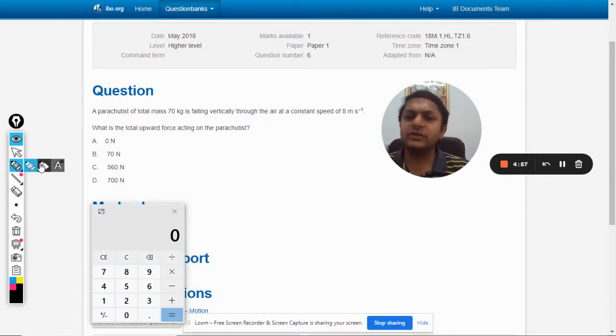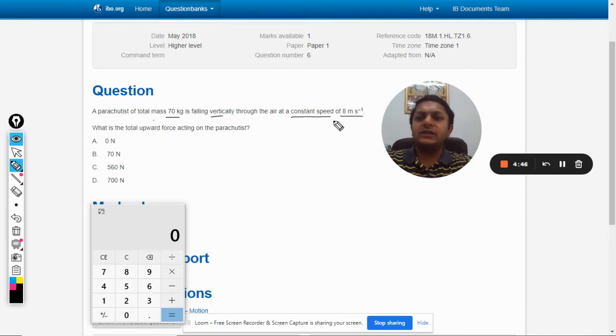In this question, a parachute of total mass 70 kg is falling vertically through the air at a constant speed of 8 meters per second. What is the total upward force acting on the parachute?